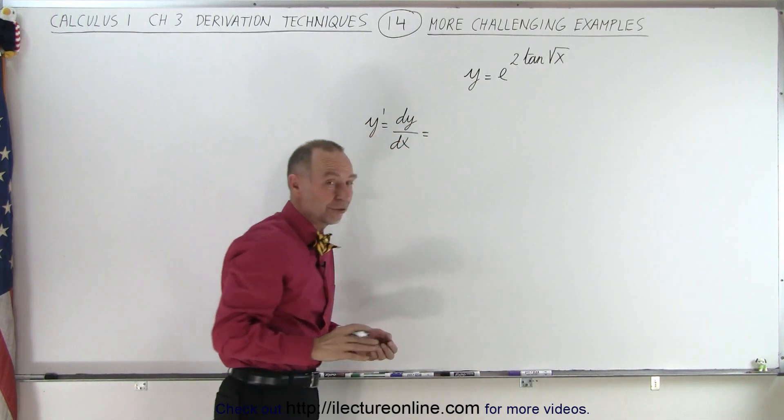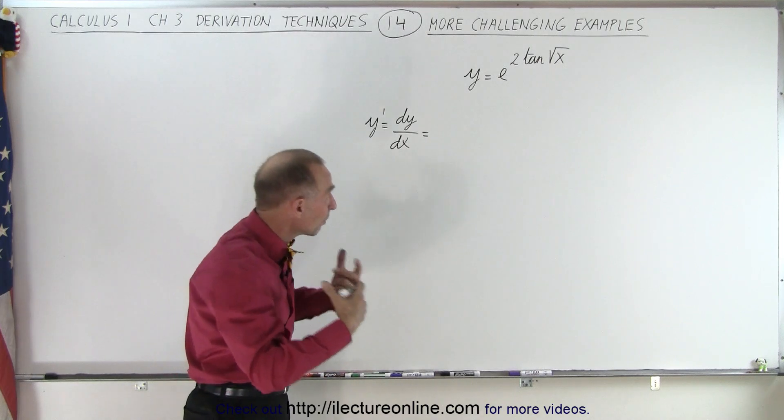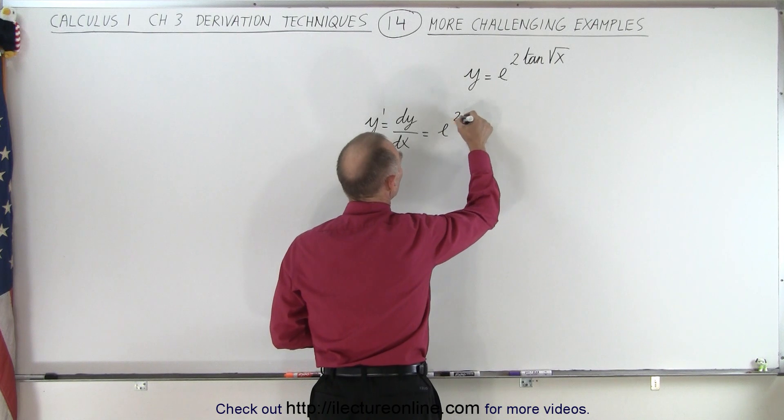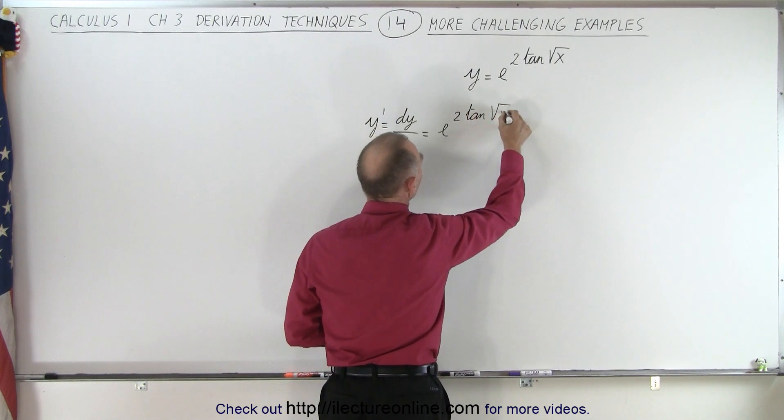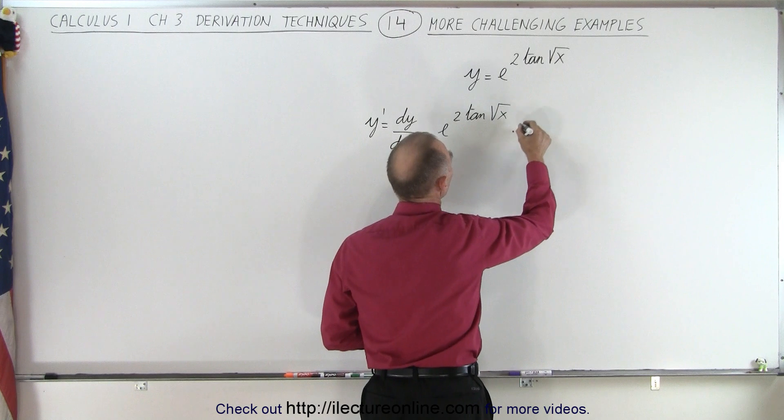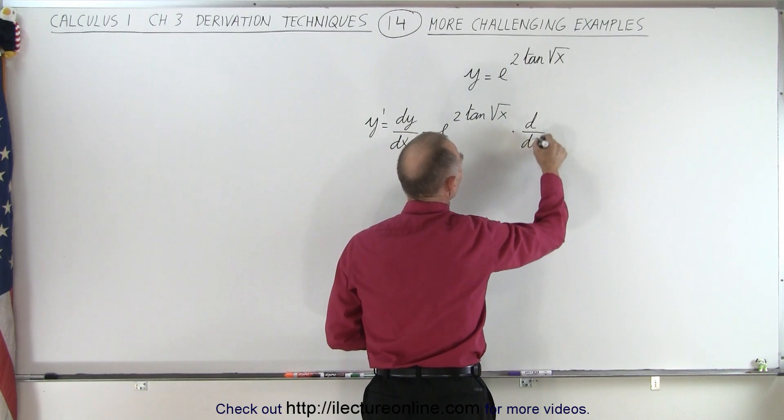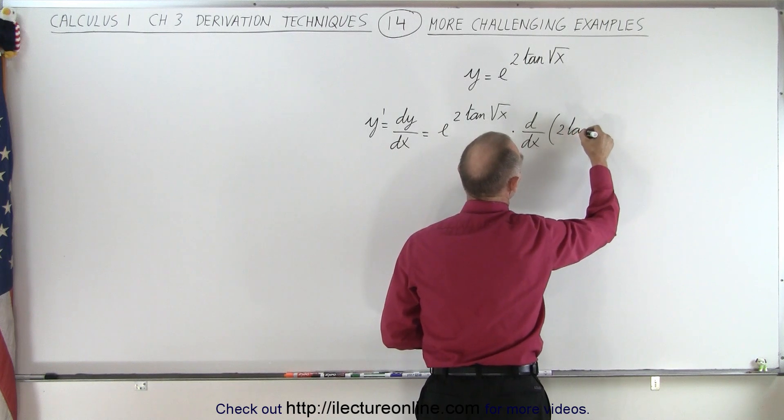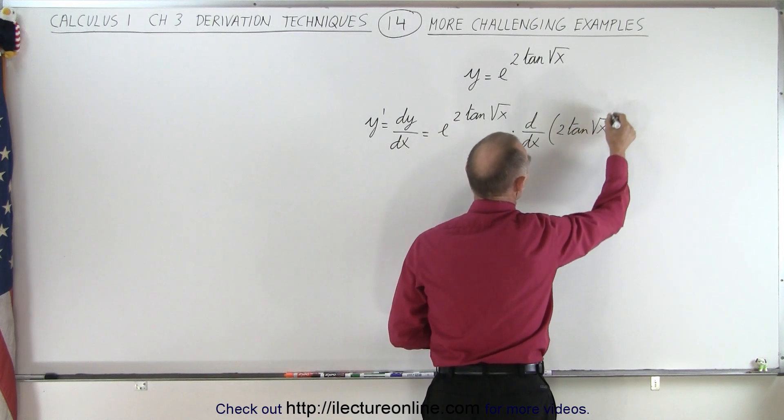well, when it's an exponential function with the base e, we repeat the function. We write e to the 2 tangent of the square root of x times the derivative, the d dx, of the exponent, which is 2 times the tangent of the square root of x.